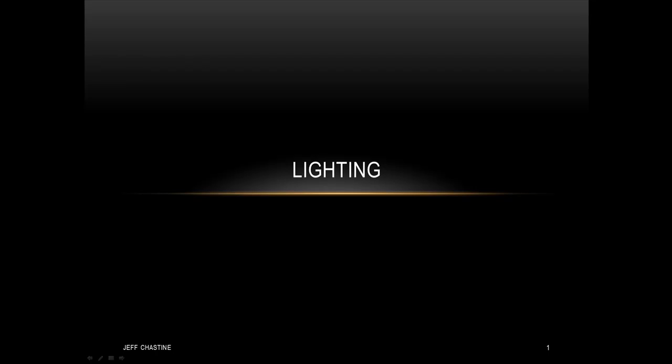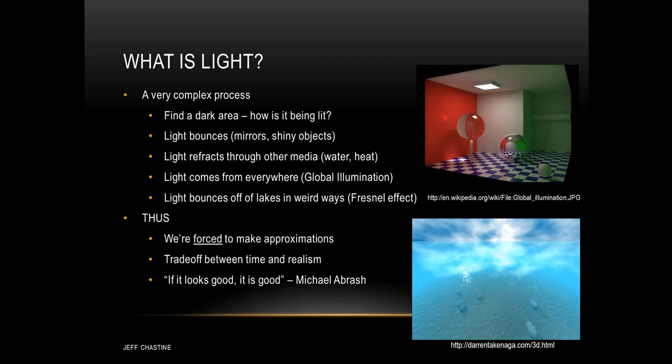Before we continue, make sure that you understand the lecture on vectors, because in this tutorial there's going to be a lot of them. So what is light? Well, in the real world, it's a really complex process. And to prove my point, find a dark area in the room that you're in, whether it's under a table or in a corner, and notice that it's impossible for that area to be entirely unlit. In other words, that area can't be completely dark. So my question to you is, how is it being lit?